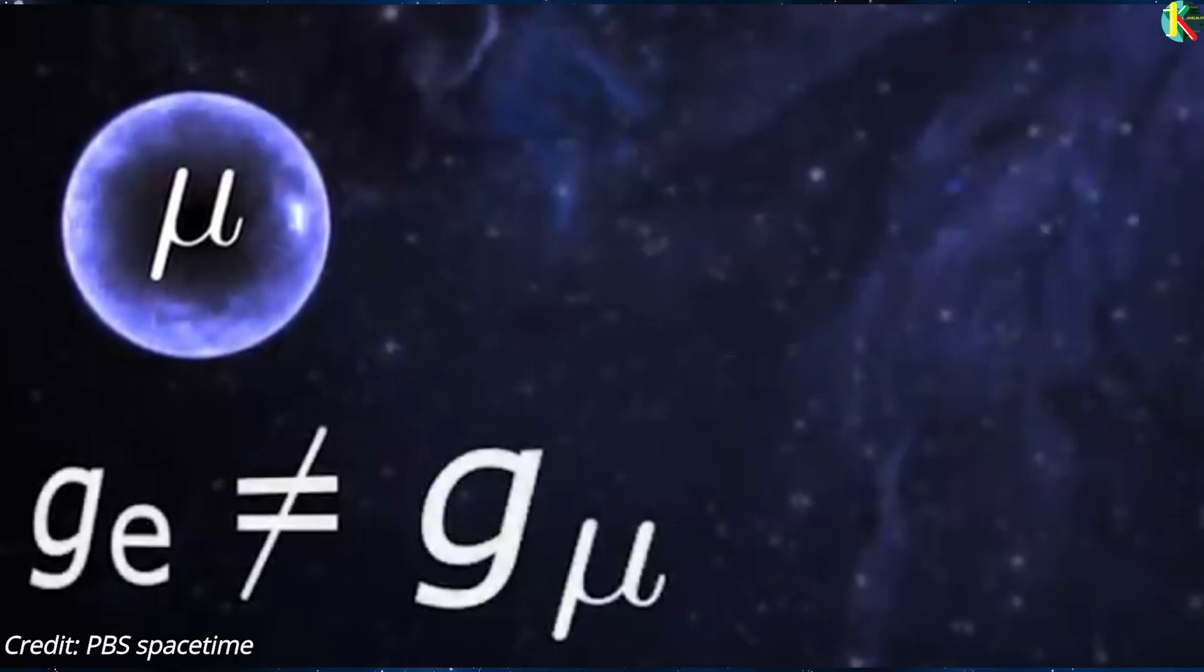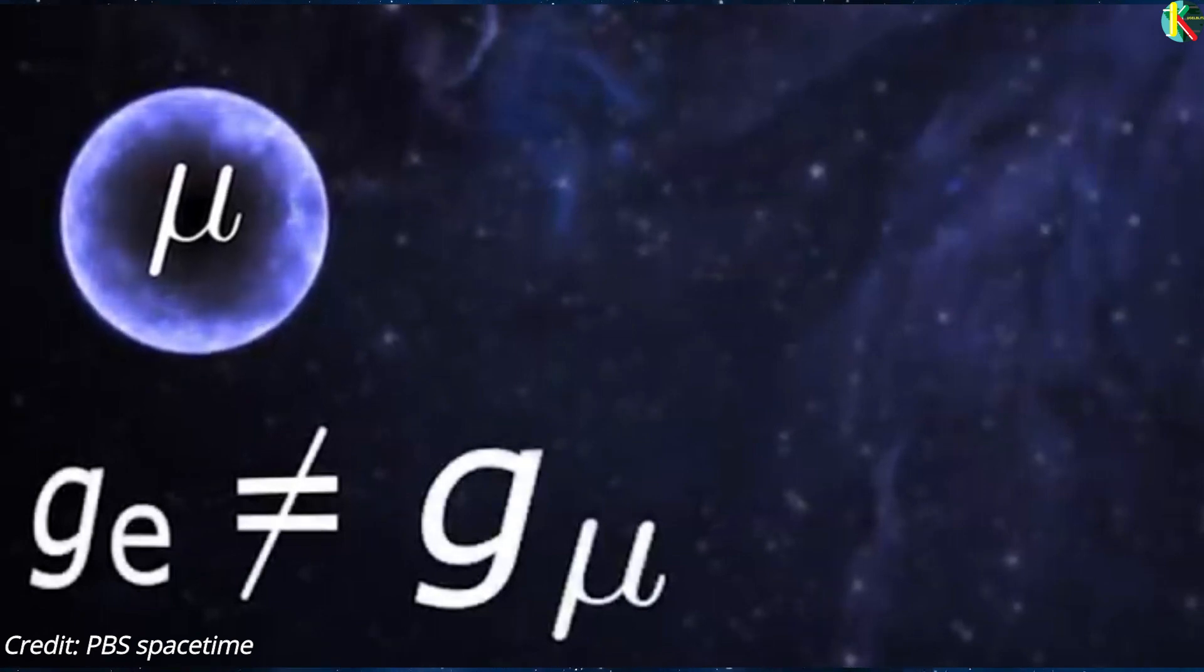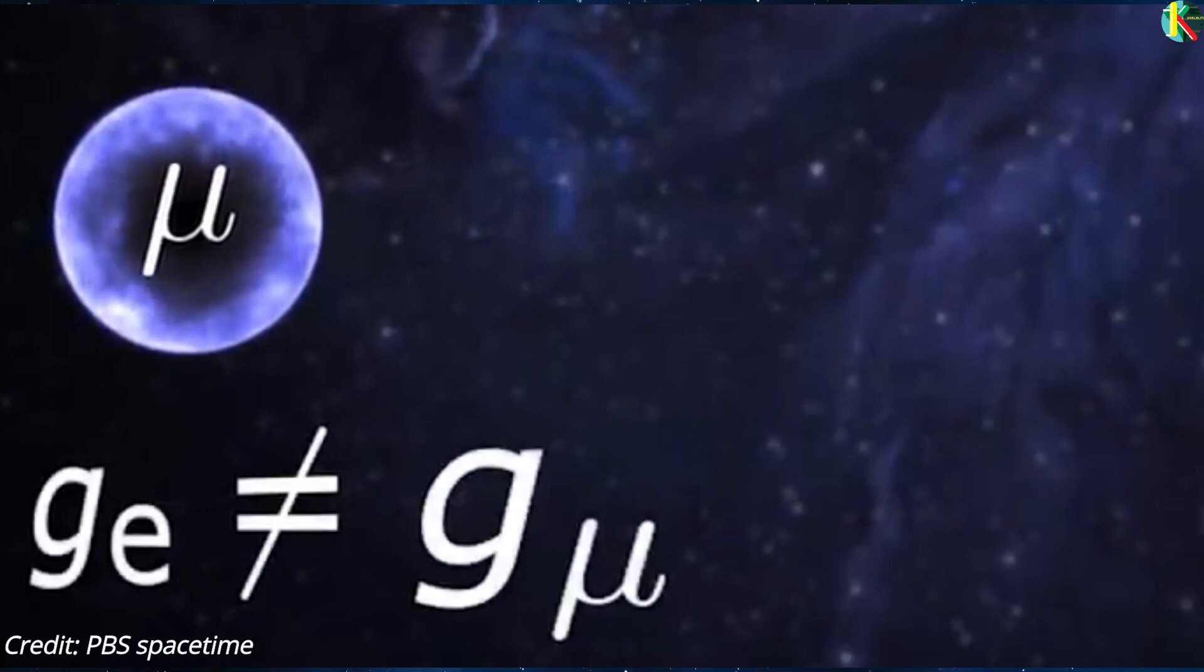They have the same exact charge and they interact with the same forces and also have the same quantum spin. But they have a different g-factor because there are slightly different ways that the muons can interact with the quantum fields.